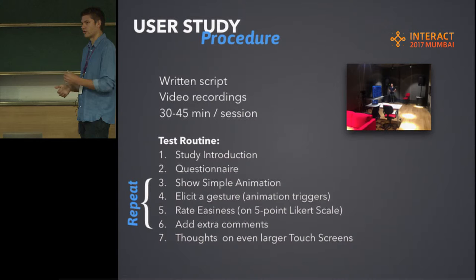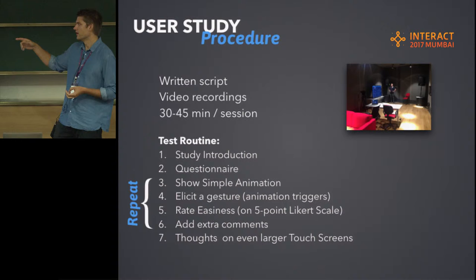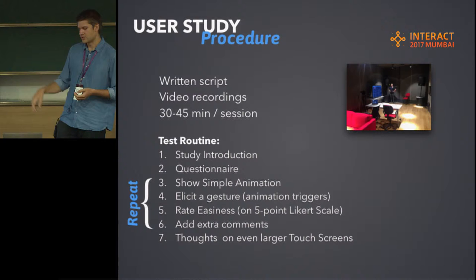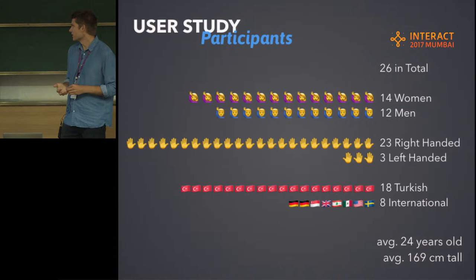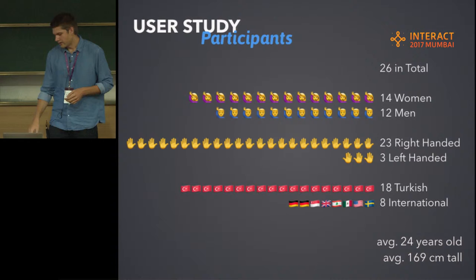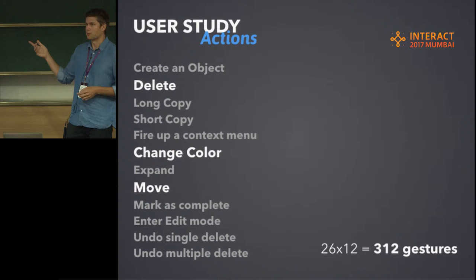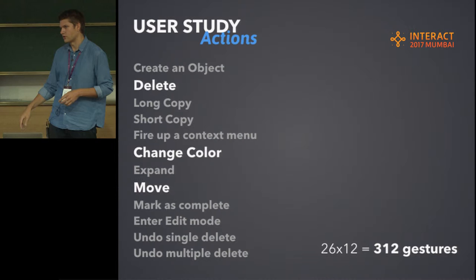Each session took about 30 to 45 minutes. We started by introducing the tasks and asking basic questions, then repeated the animation and had participants do their gestures, asked them some questions, and had them rate how hard it was to come up with the gesture. We repeated that for all the actions we defined. In total we had 26 participants, mostly right-handed, mostly from Turkey. Highlighted here are the three gestures you saw at the beginning, but we also had actions like creating an object, copy, and opening a menu — 12 actions in total.